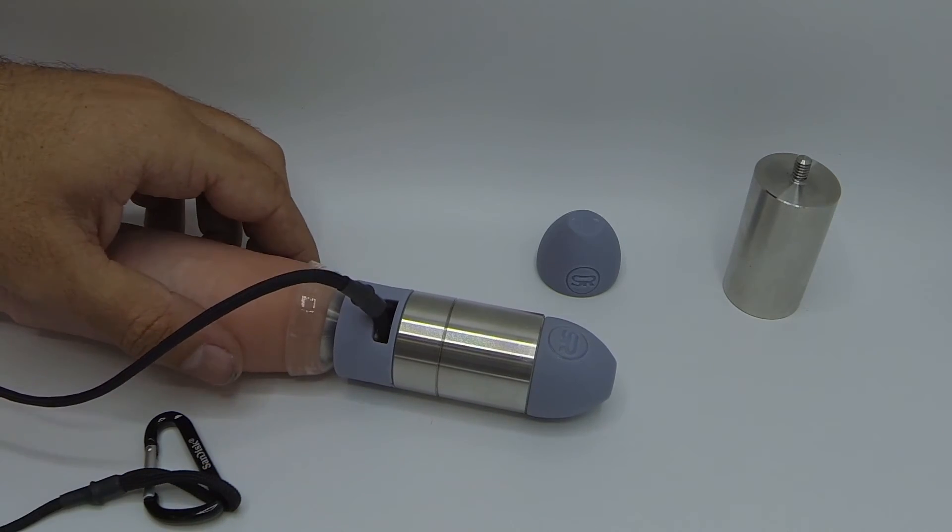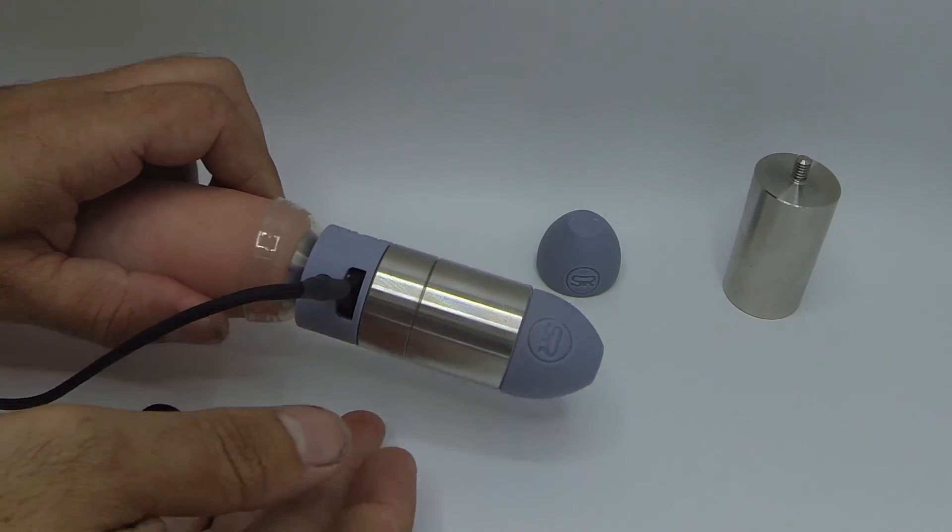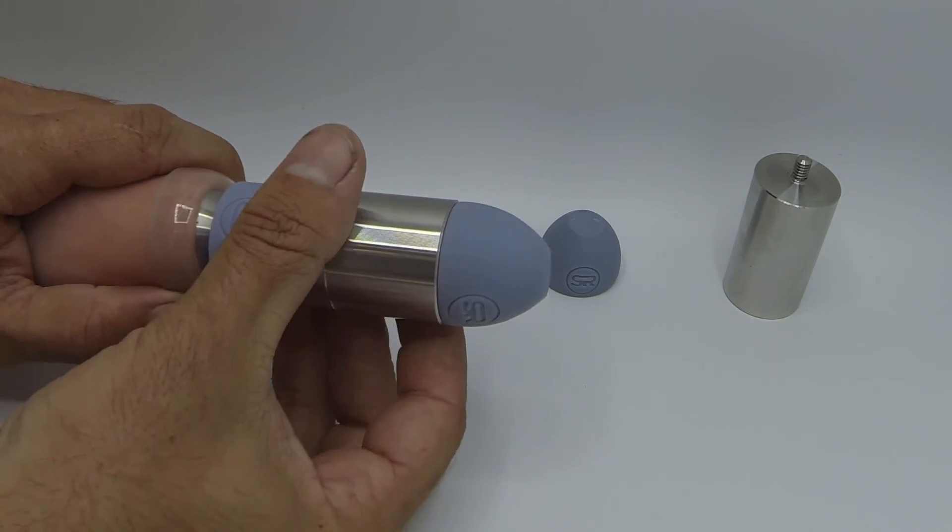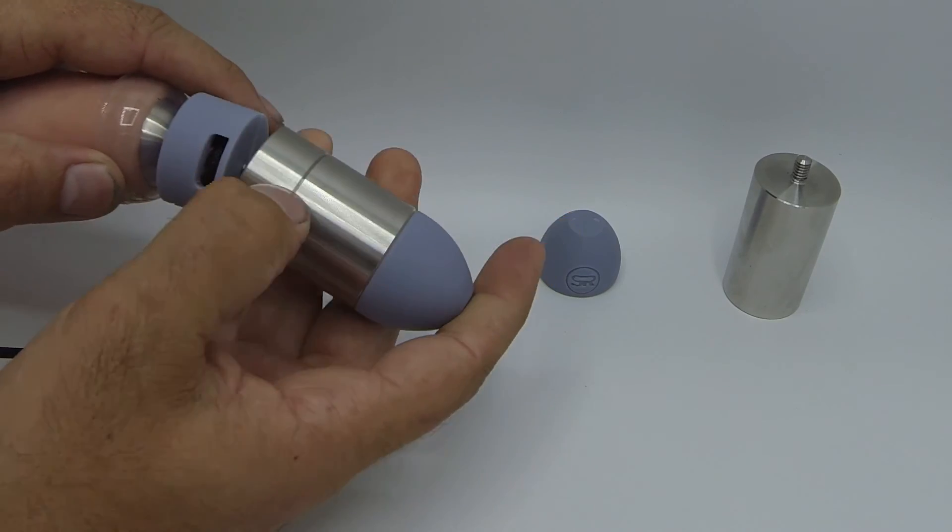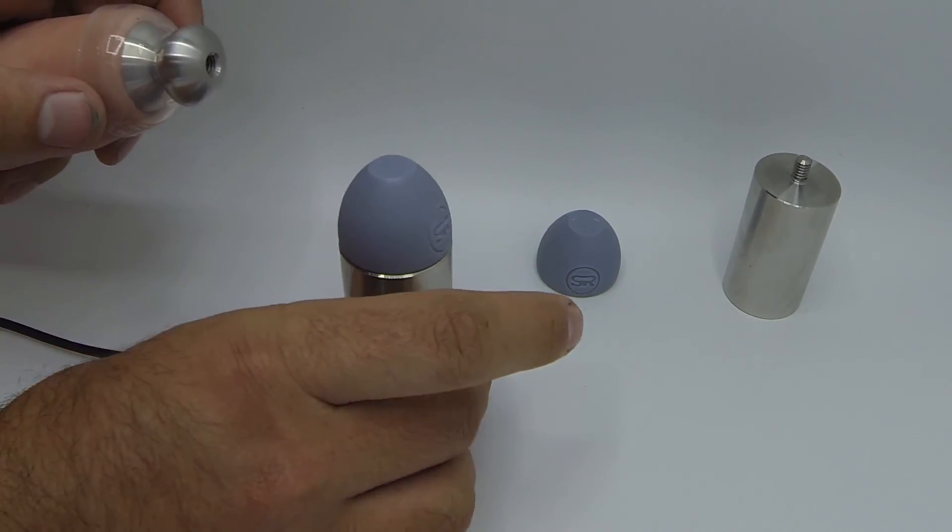Now if you need to pee while you're wearing your weight set, it's really easy. All you got to do is hold the weight spacer with one hand and unscrew your weights. Remove the whole assembly and now you can easily pee.